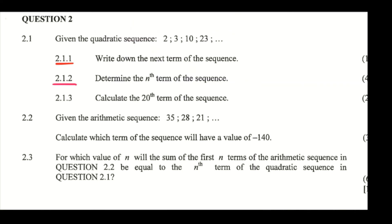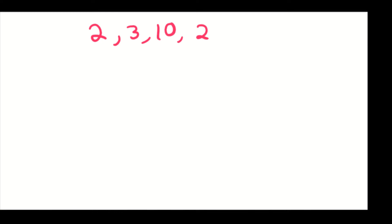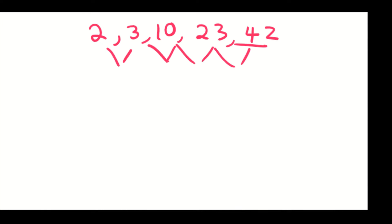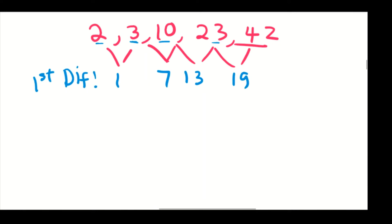For 2.1.2, we must find the nth term of the sequence — basically the general equation. Our sequence is 2, 3, 10, 23, and 42. The first differences are 1, 7, 13, and 19. The second differences are all 6, confirming it's quadratic.